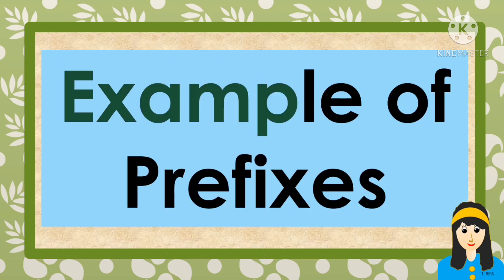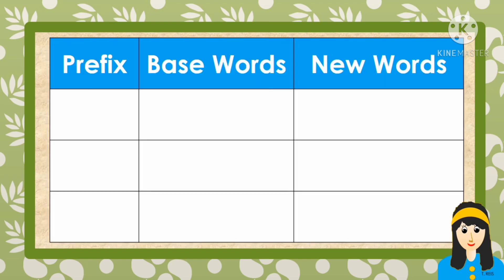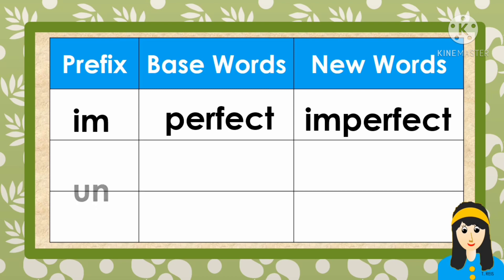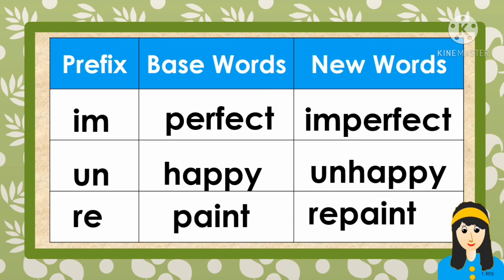Here are examples of prefixes. The prefix im with base word perfect gives the new word imperfect. Second is un, with base word happy, giving the new word unhappy. The third one is re, with base word paint, giving the new word repaint.